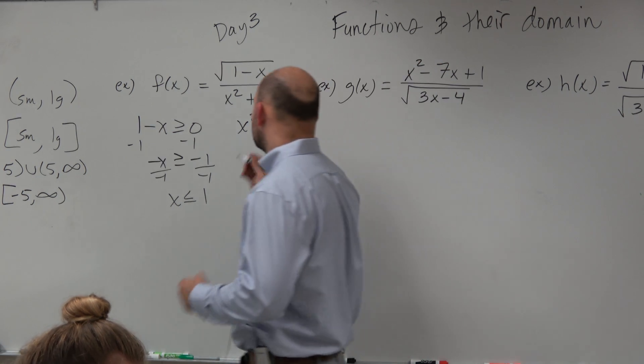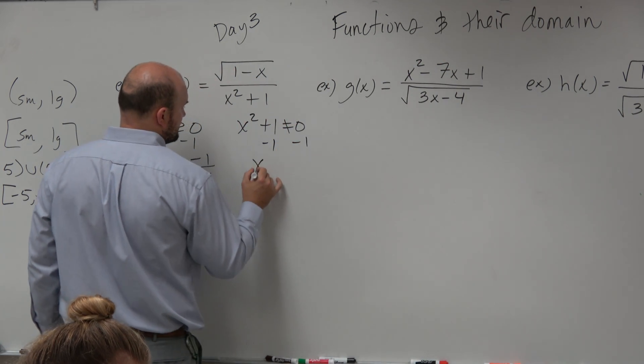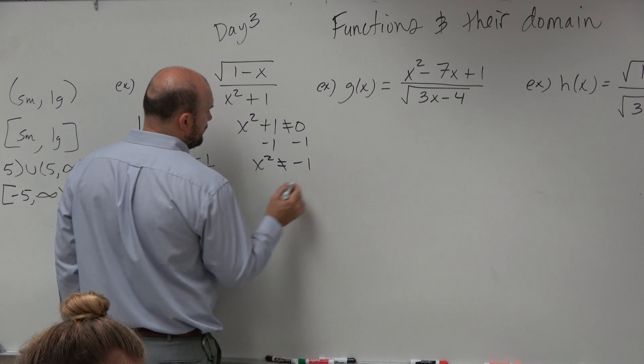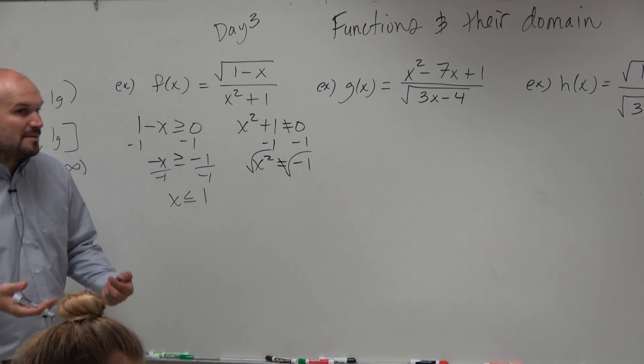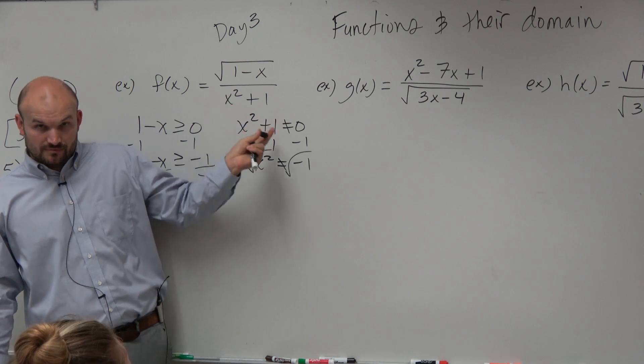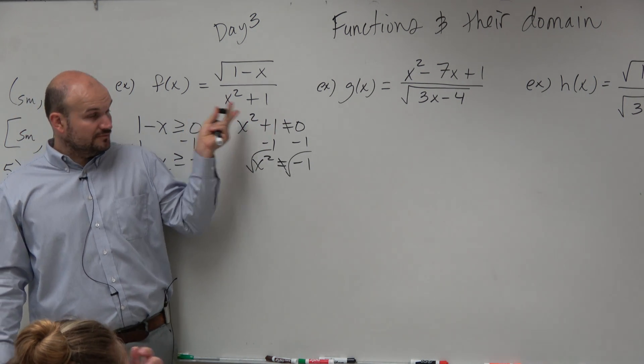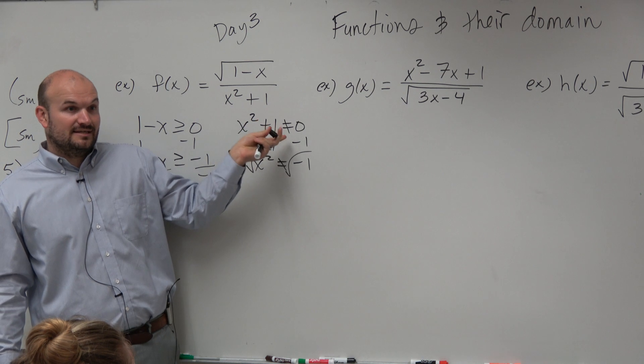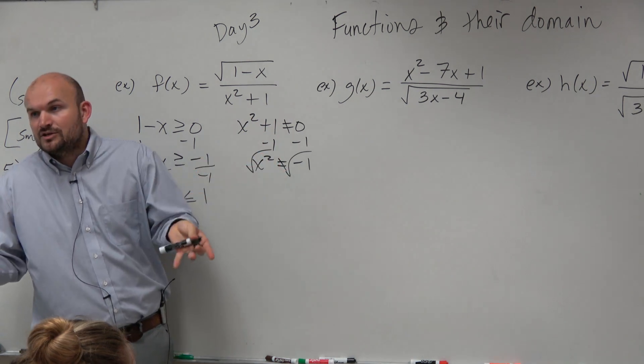Over here, we're going to go ahead and solve for x, so we subtract 1 on both sides. x squared cannot equal negative 1, so we'll take the square root. But remember, we're looking for values that should not be in your domain. Whatever number we get here cannot make us equal to 0. That's going to not be in our domain.